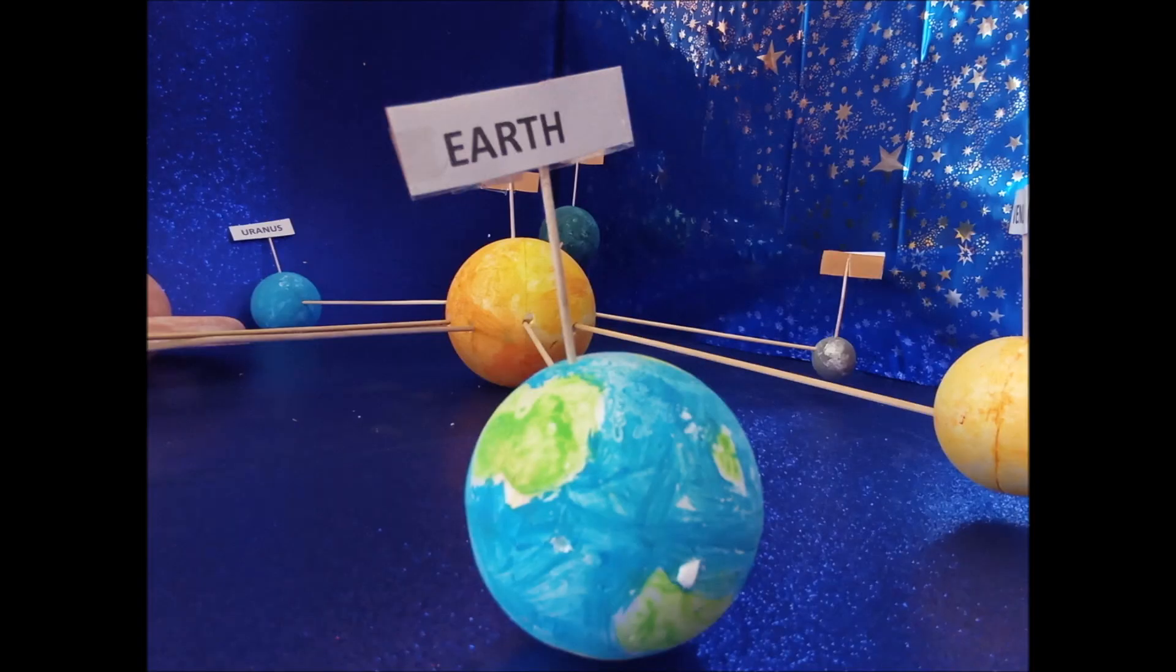The Earth is our planet. It's got one moon. The Earth has got water and air and it's got a satellite, the moon.